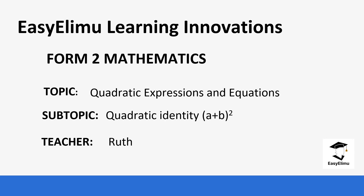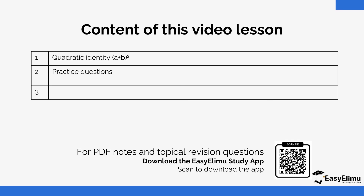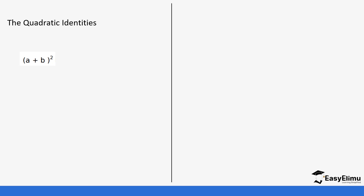The quadratic identity we are going to discuss today is (a + b) squared. In previous lessons we were expanding expressions — both whole numbers and fractions, including mixed expressions. Today we focus on the identity (a + b) squared. When it comes to (a + b) squared, you can either go the long method or use an identity that helps you solve questions quickly without necessarily expanding.